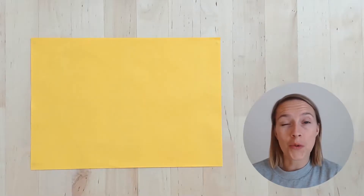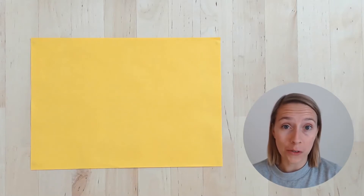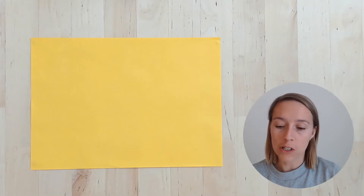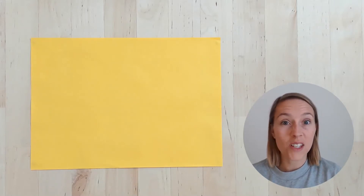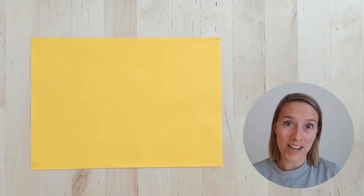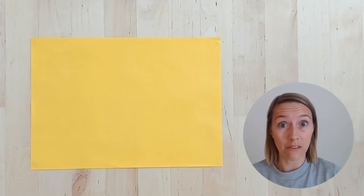The first thing we need to do when we're making a graph is give it a title. So I'm going to call it 'This Week's Weather' and put today's date on it so I know that I'm talking about the week that we're in right now.